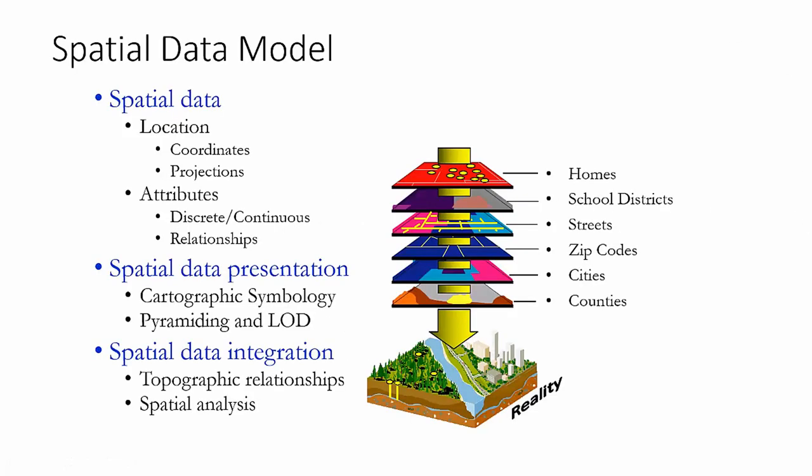A spatial data model is very similar to other database data models. What makes it unique is that it stores location along with a set of attributes. Typically that location is stored as a set of coordinates — either coordinate pairs or vector information providing an offset. These are always in reference to a known location, an origin, managed and stored in a projection or coordinate system so we can understand where things are in reference to the real world.